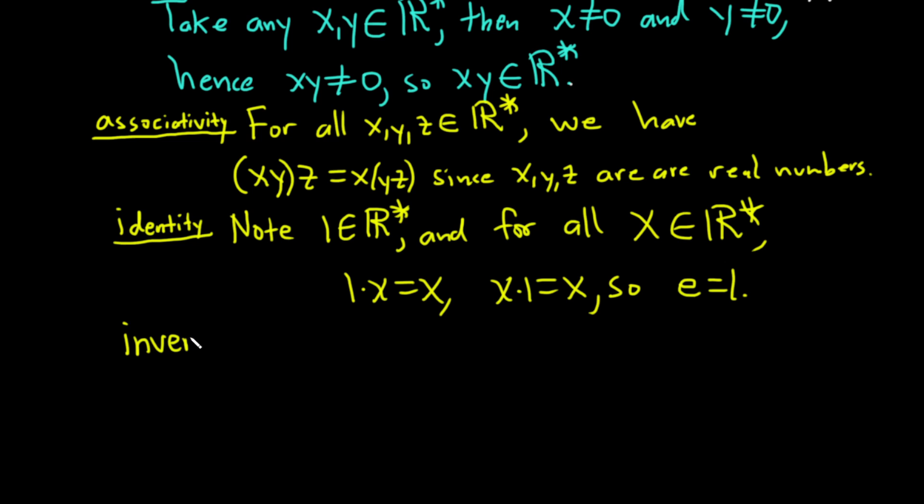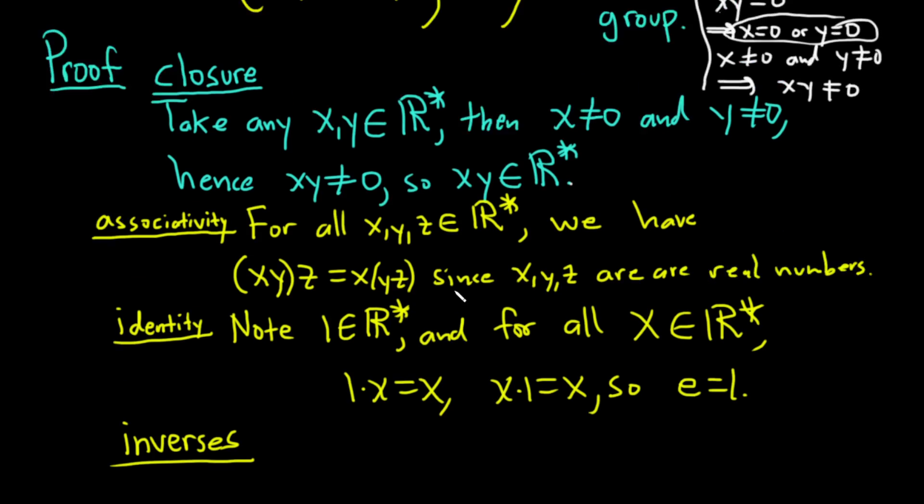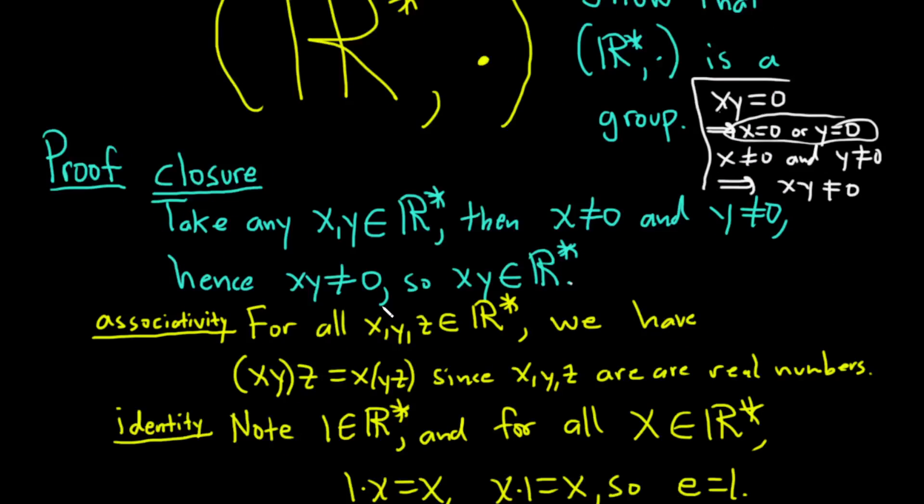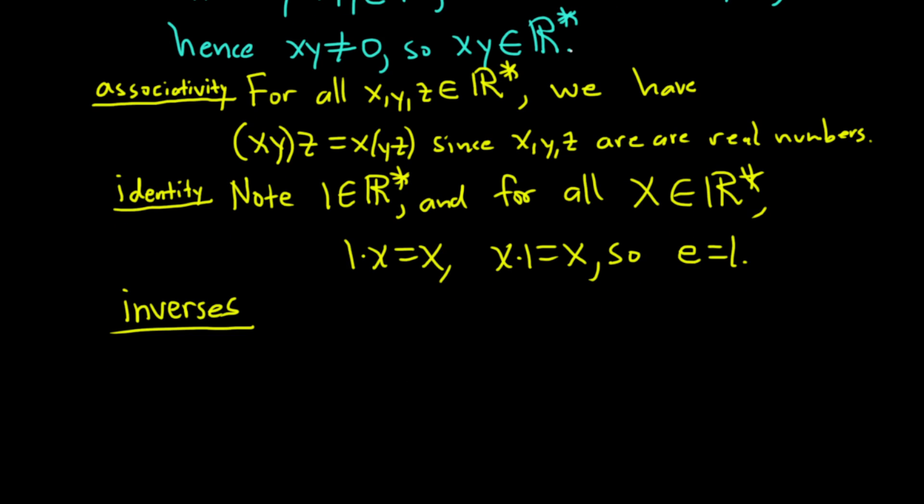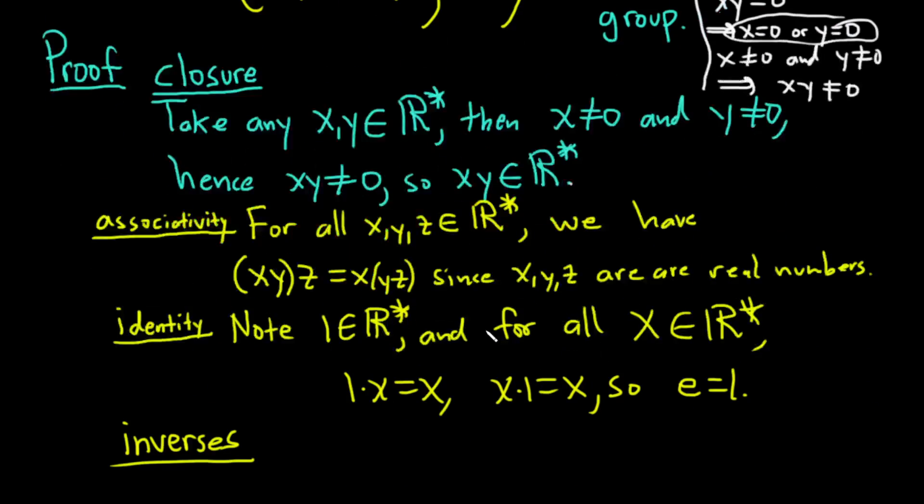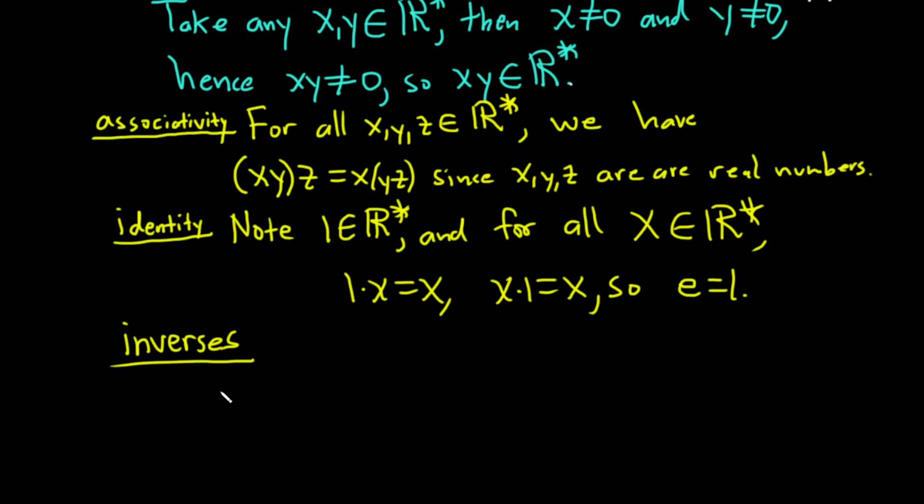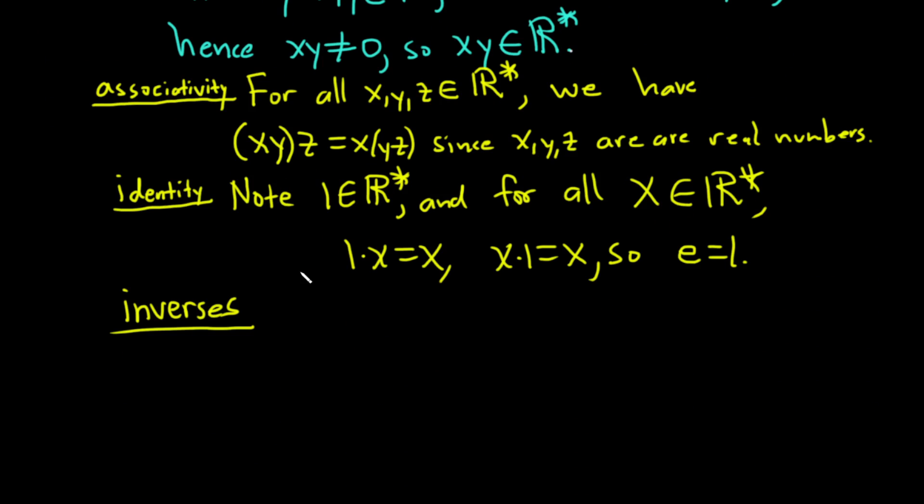And then inverses. This is where the fact, this is where the non-zero comes into play. I probably should have said that earlier, but I guess we weren't really thinking about that specific thing. This is what allows it to be a group. Because if you look at just the real numbers under multiplication, that's not going to be a group because of zero. Because we're throwing away zero, that allows us to create this group.